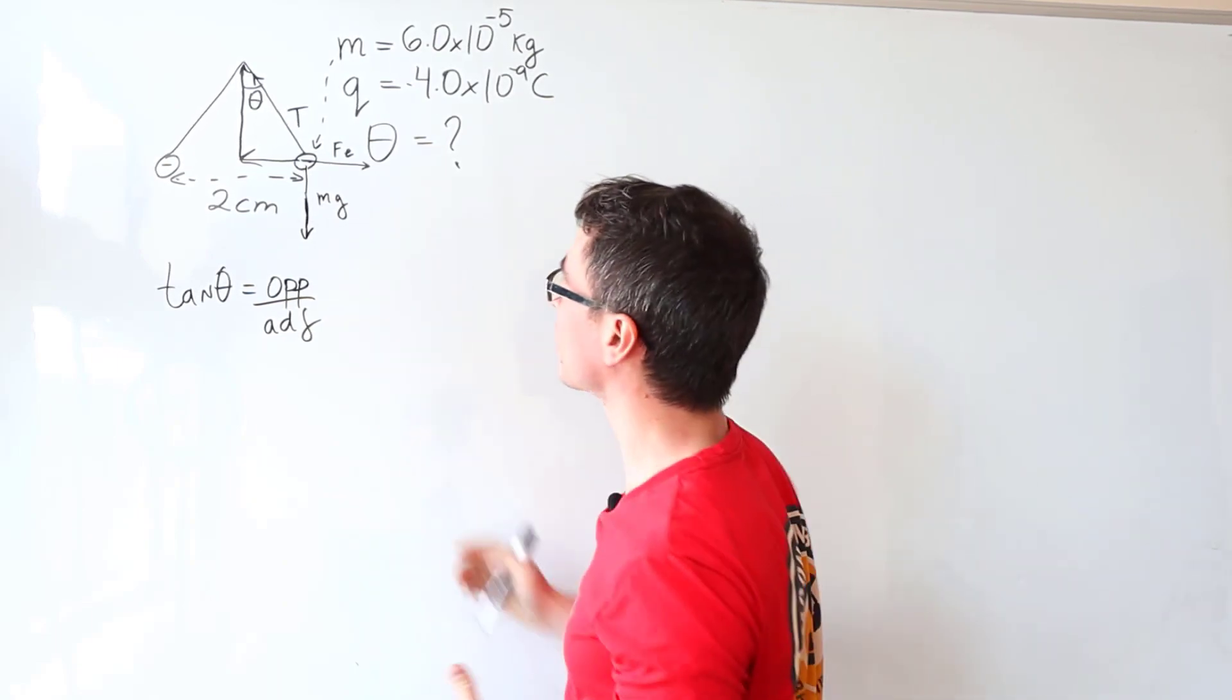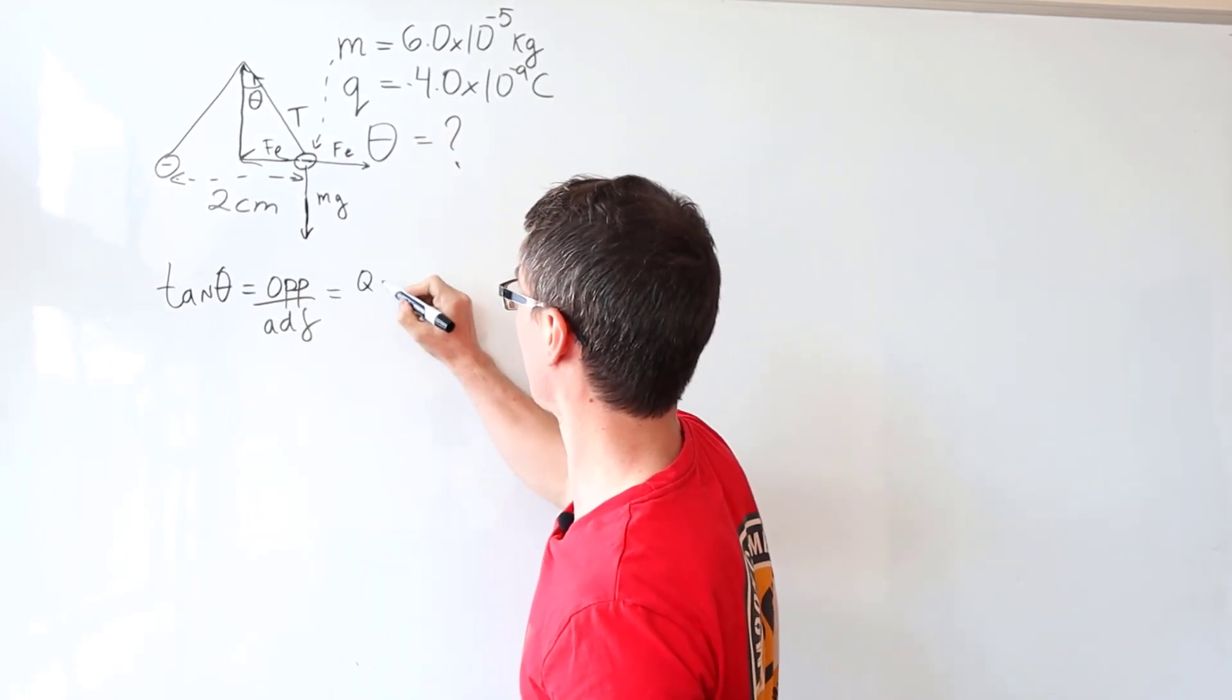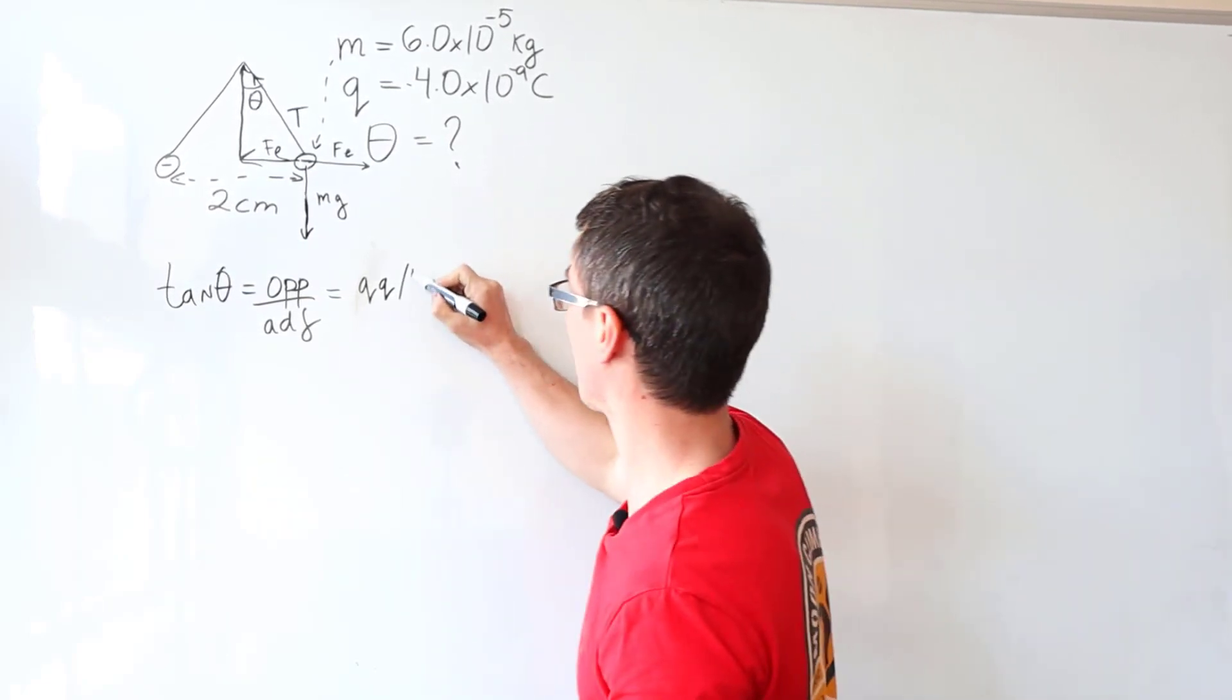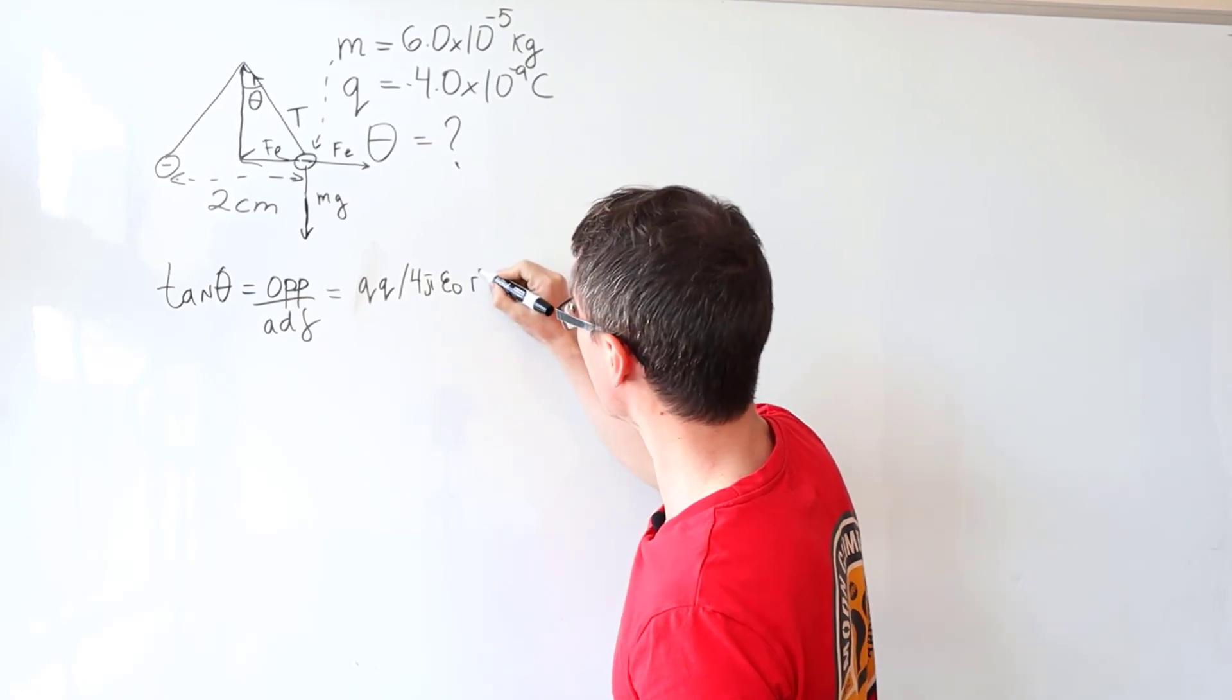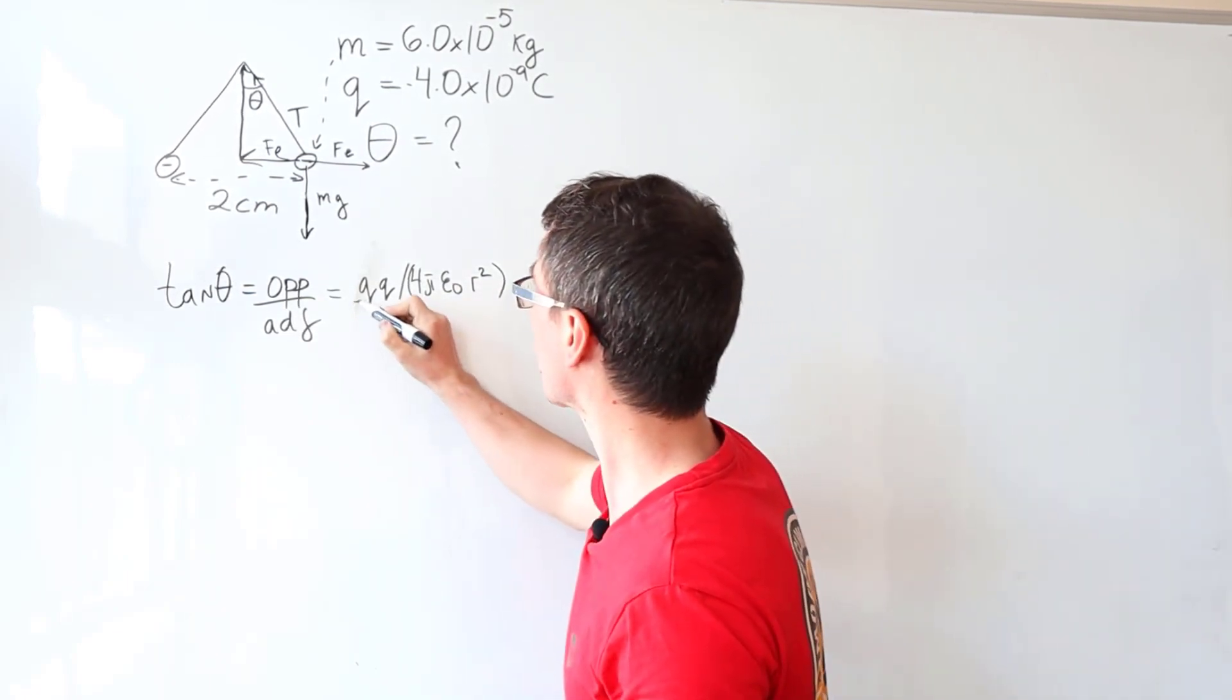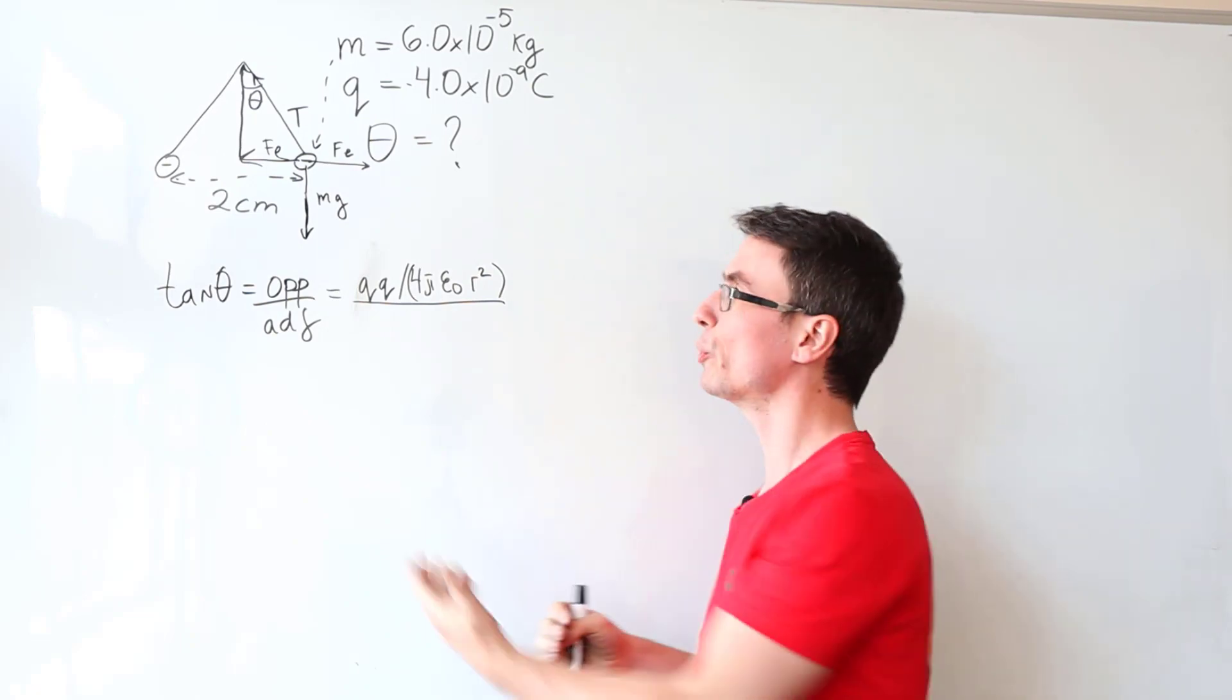Now, our opposite component will simply be equal in magnitude to the electrical force, which is going to be given by Q multiplied by Q divided by 4 pi epsilon naught and then multiplied by the distance between them squared. This is just the Coulomb repulsive force. Then we're going to be dividing that by the adjacent and this component here will be equal in magnitude to the weight.